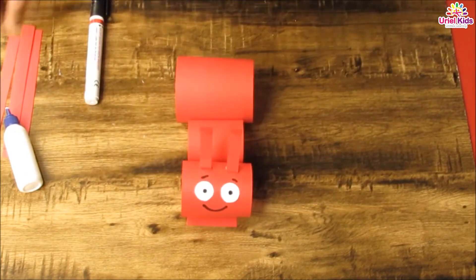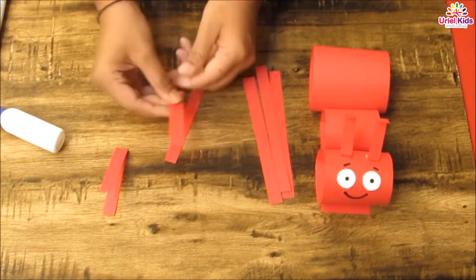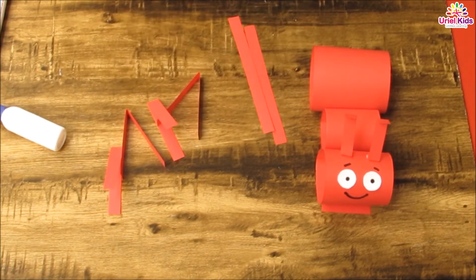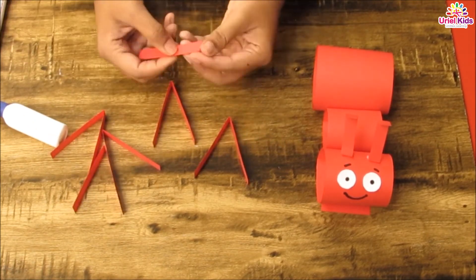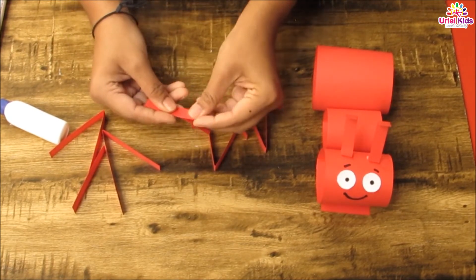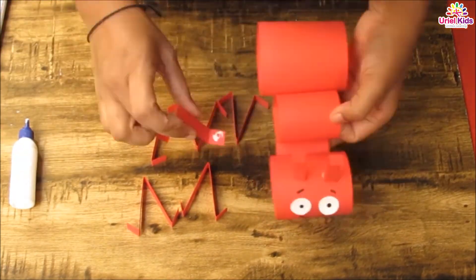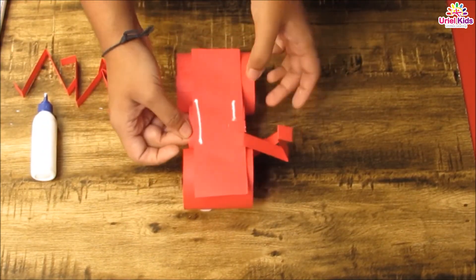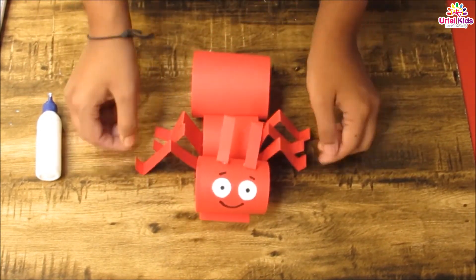To crawl, our ant needs legs. Did you know an ant has six legs? Let's fold six small strips of paper as shown and stick them. Our ant looks so cute! Great, our cylinder shaped ant is ready to crawl.